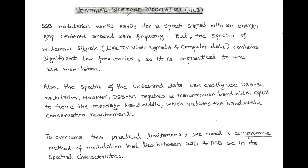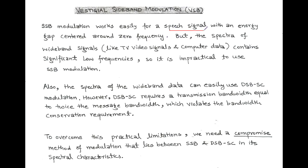Hello friends, our next topic is vestigial sideband modulation or VSB. As we know that SSB modulator works satisfactorily for speech or voice signals because in the spectrum of speech or voice signal there is an energy gap between two sidebands, and this spectrum is centered around zero frequency. Due to this characteristic feature, the transition band of the bandpass filter is adjusted properly so that one of the sidebands — upper or lower single sideband — is allowed to pass completely.